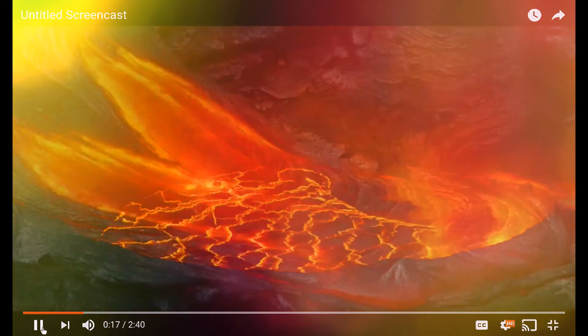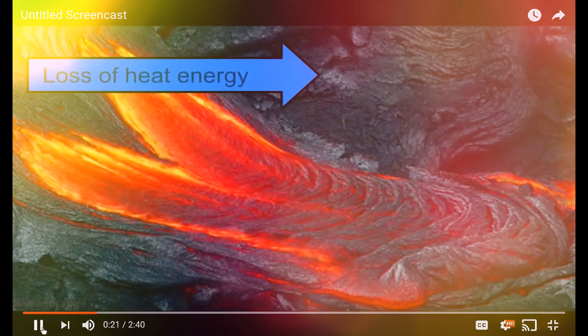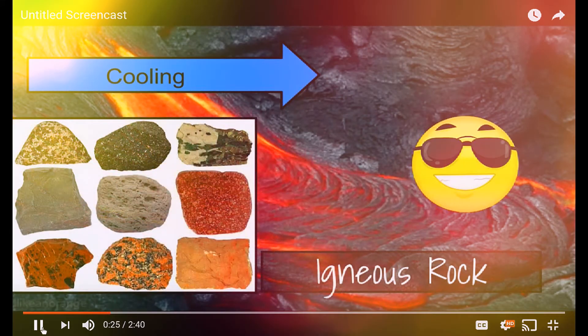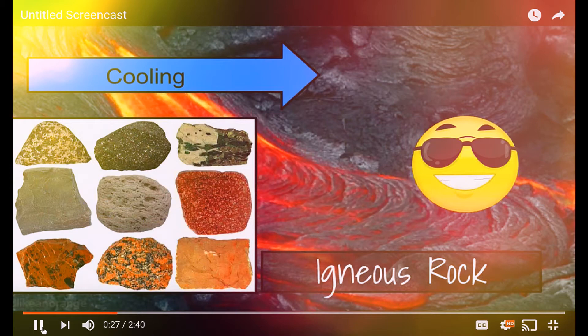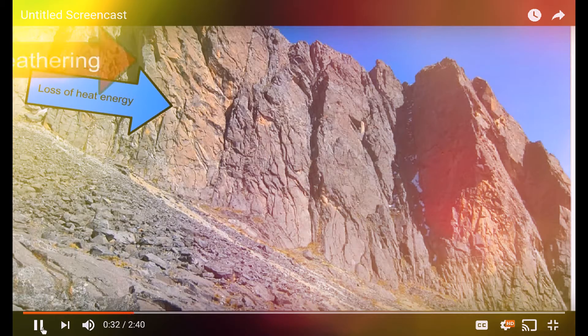The lava will start to cool. This cooling process will actually turn these, through the loss of heat energy and cooling, into a different kind of rock known as an igneous rock. It's the only kind of rock that's formed through the loss of heat energy. Once it's formed, any kind of rock can then go through another type of energy process.